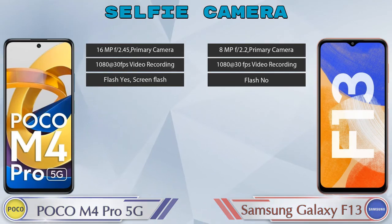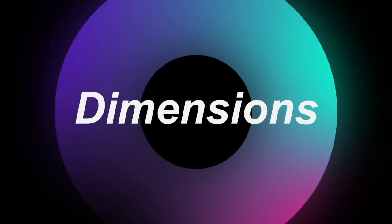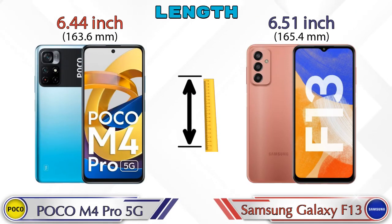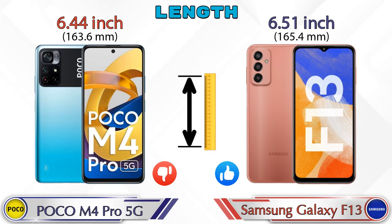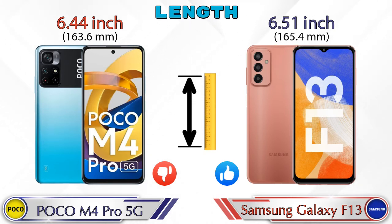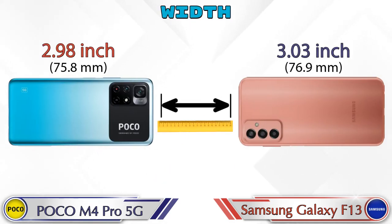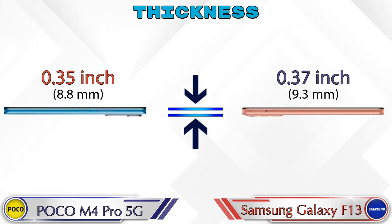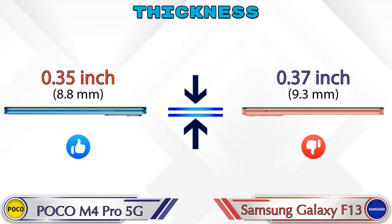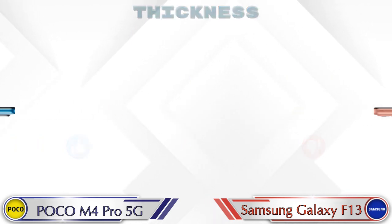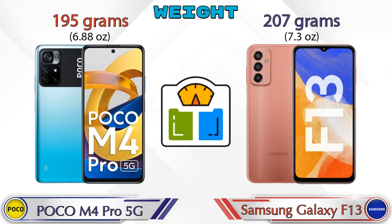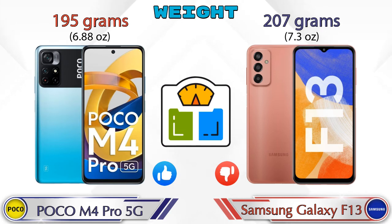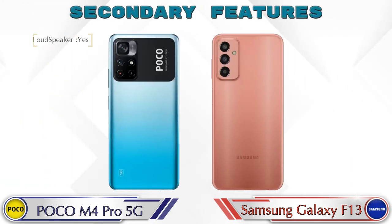Now let's check the dimensions. The M4 Pro 5G has a length of 6.44 inches and the Galaxy F13 is 6.51 inches. Width is 2.98 inches on the M4 Pro 5G versus 3.03 inches on the Galaxy F13. Thickness is 0.35 inches versus 0.37 inches, making the Galaxy F13 thicker. Weight is 195 grams for the M4 Pro 5G versus 207 grams for the Galaxy F13, which is heavier.